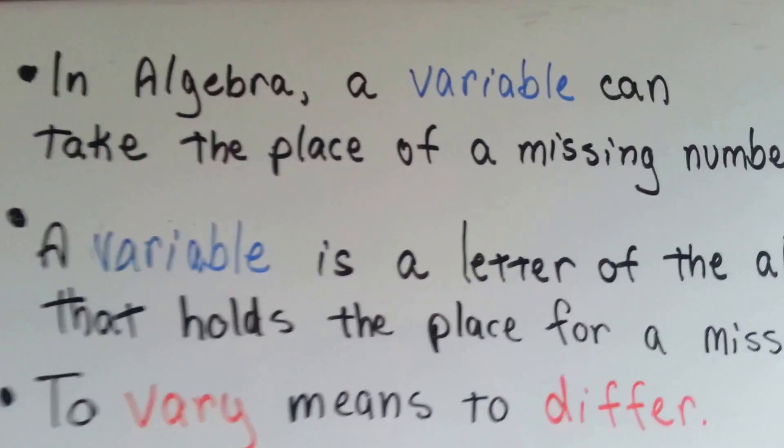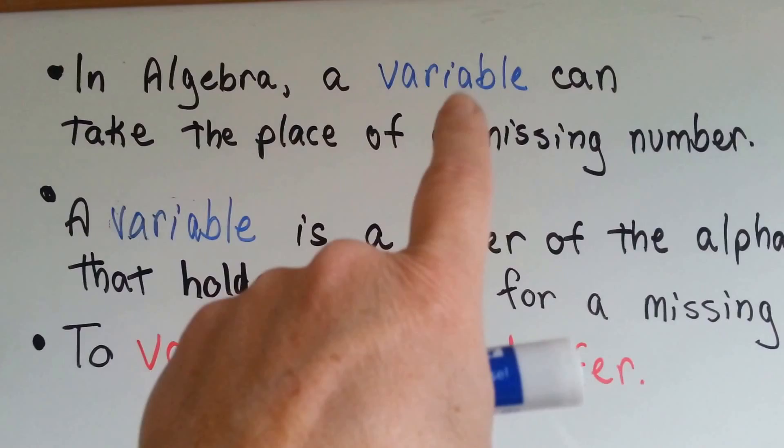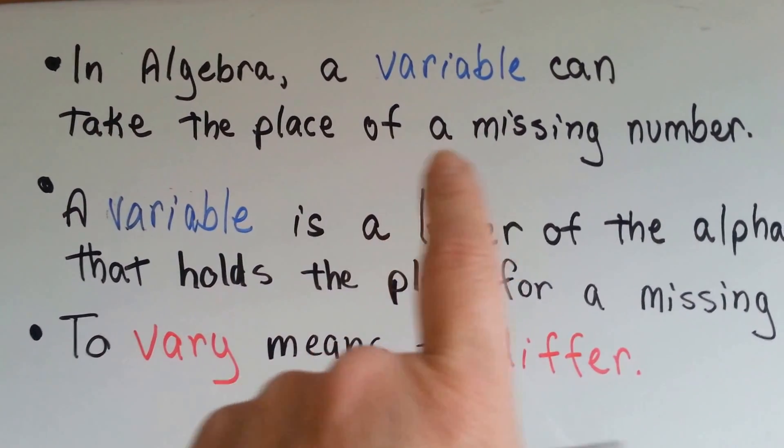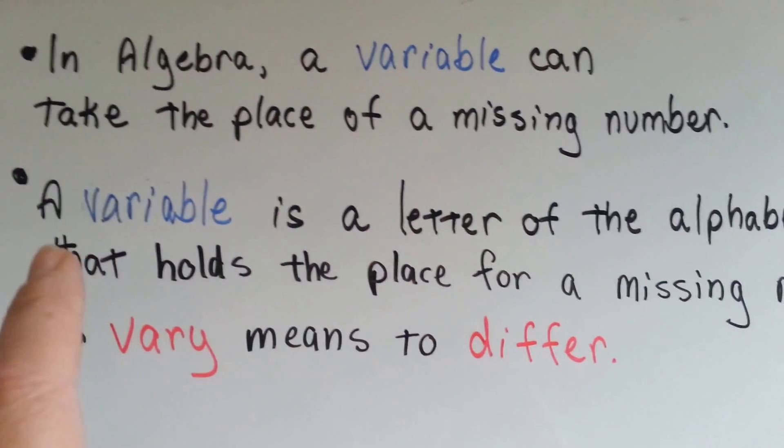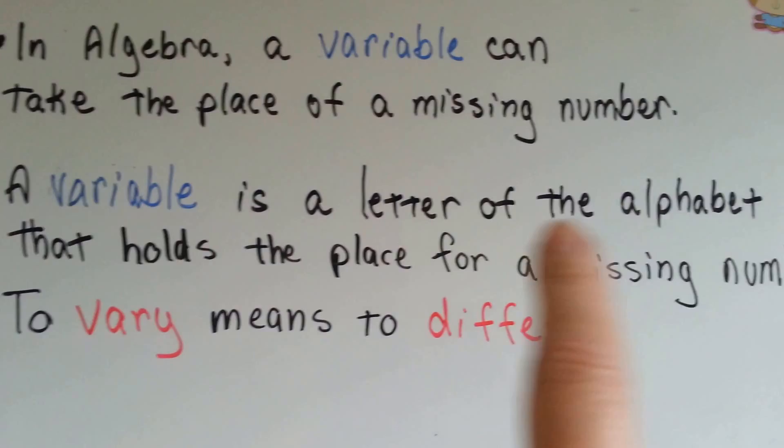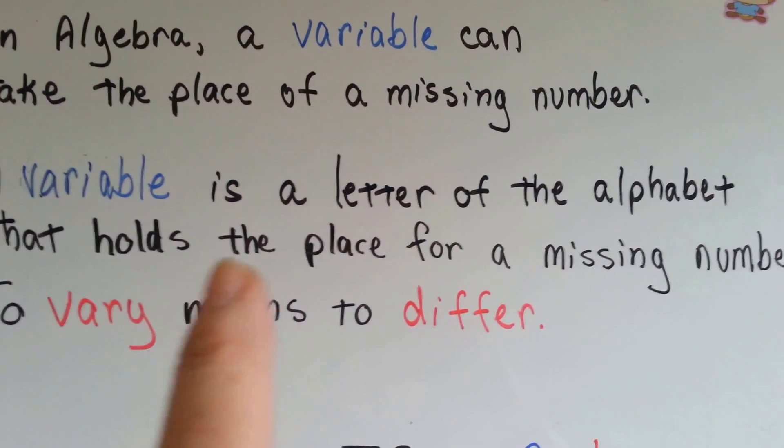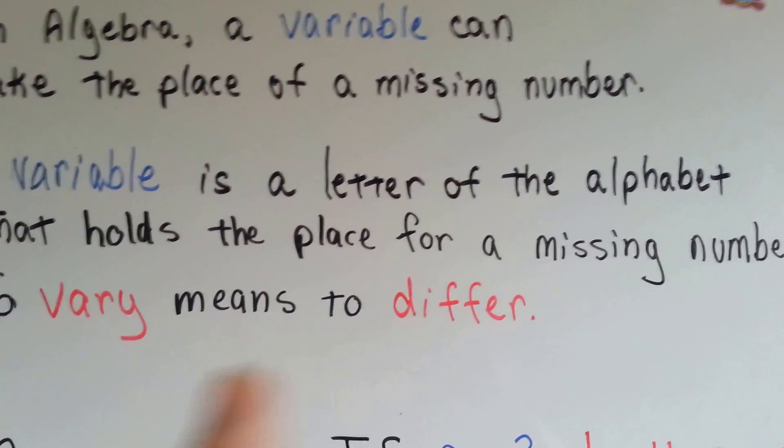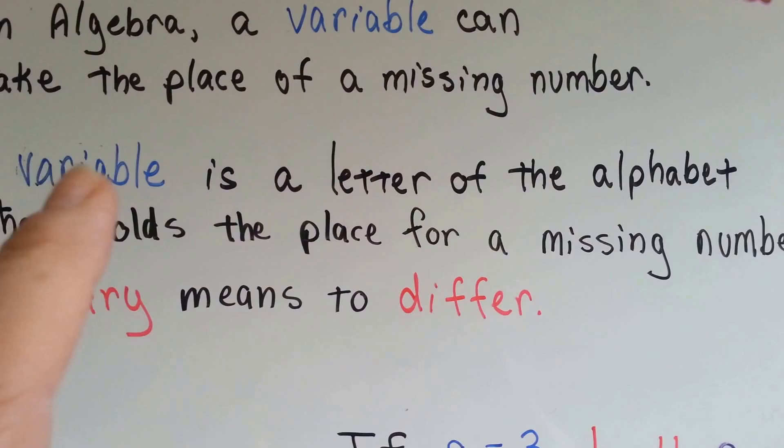So look, in algebra, a variable can take the place of a missing number. A variable is a letter of the alphabet that holds the place for a missing number. To vary, see, variable, vary.